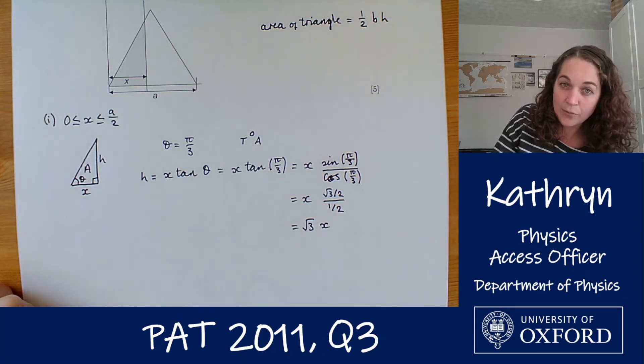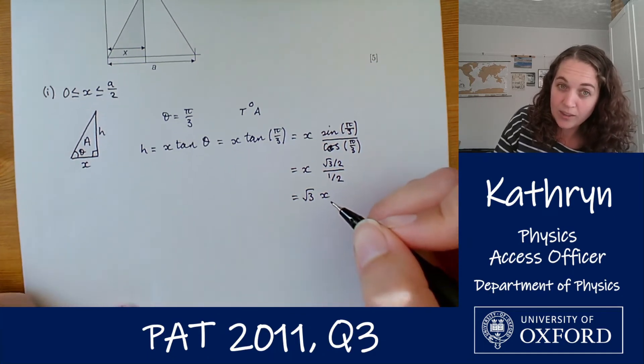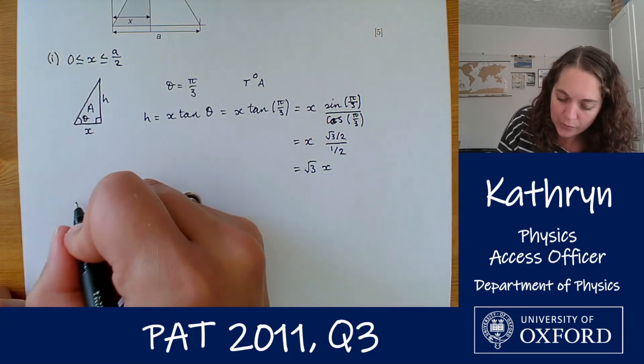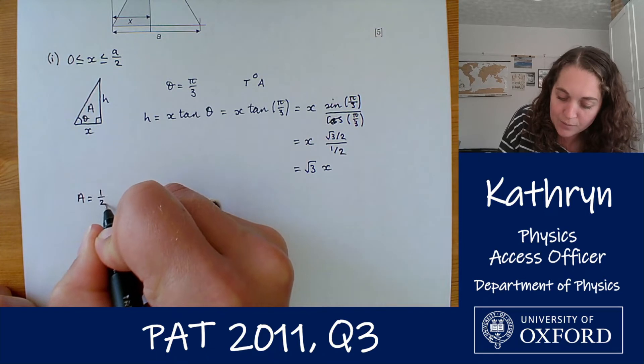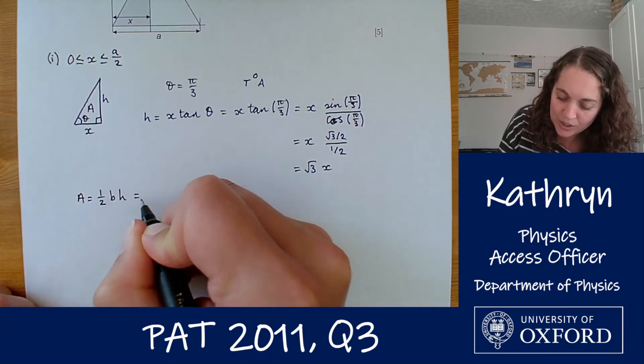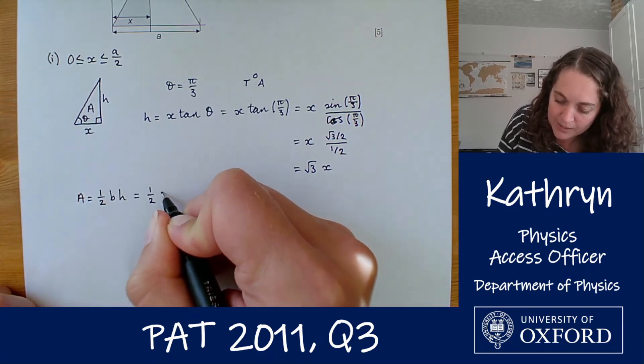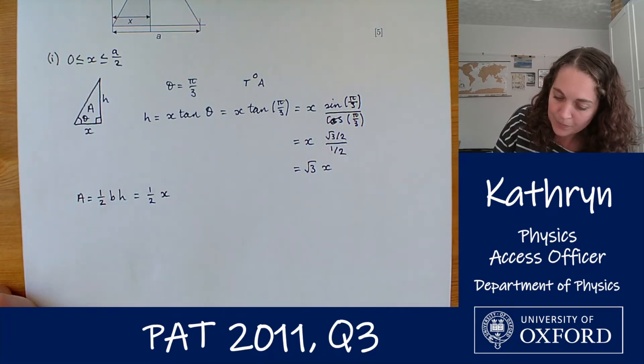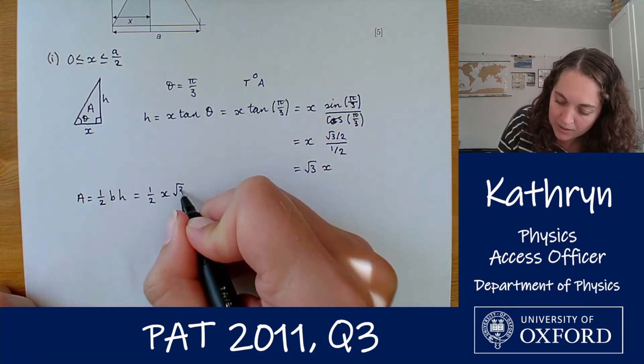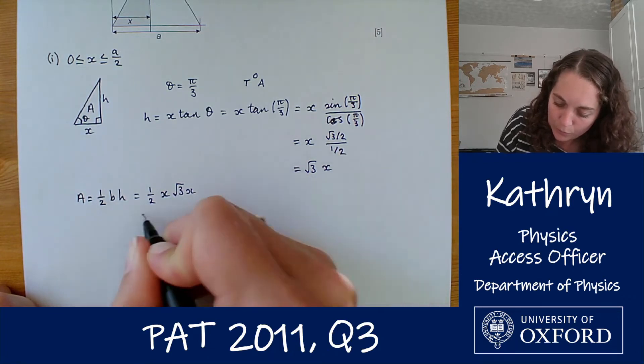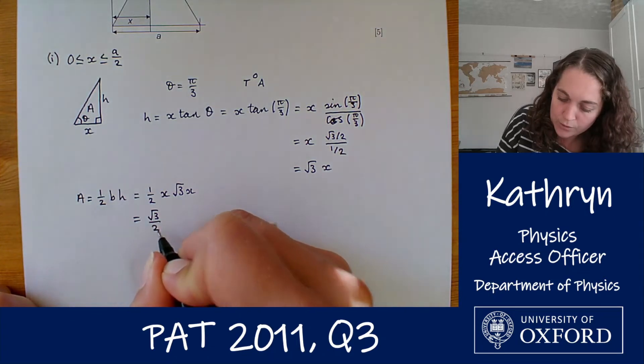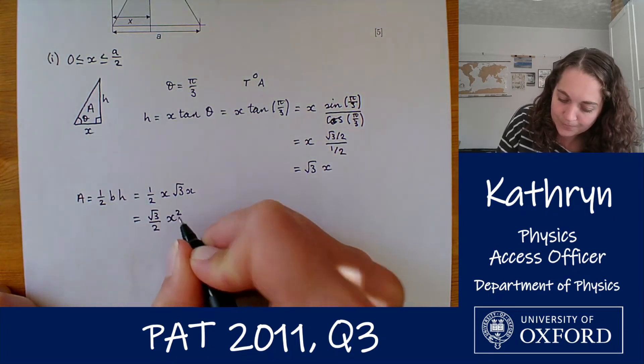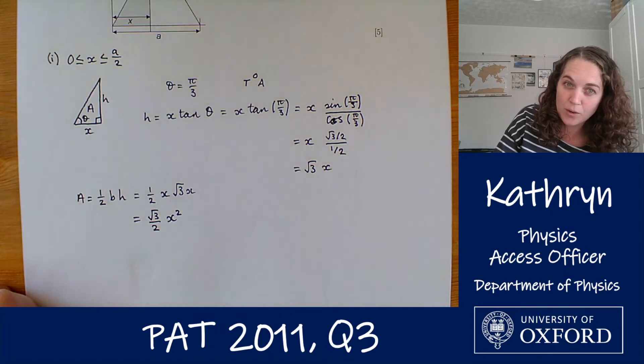So that's our expression for the height of our triangle so then we know the area, area is half times the base times the height which is half times x which is the base times the height which is root 3 x which equals root 3 over 2 times x squared. All right so that's part one done.